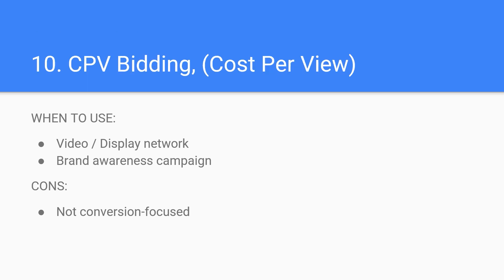Next up, we have cost per view bidding, or CPV bidding, strictly reserved for video advertising on Google Ads and the YouTube ads platform. Using CPV bidding, you pay for video views or interactions — which on YouTube could be call to action clicks, overlay clicks, cards, or companion banners. A view is counted when someone watches an entire 30 seconds of your ad, or the full ad if it's under 30 seconds. CPV bidding is the default bid setting for YouTube ads. You start by entering the highest bid you're willing to pay for a view or interaction — your maximum cost per view. If you set your cost per view to $0.25, you would pay a maximum of $0.25 when a user watches your ad or engages with your call to action.